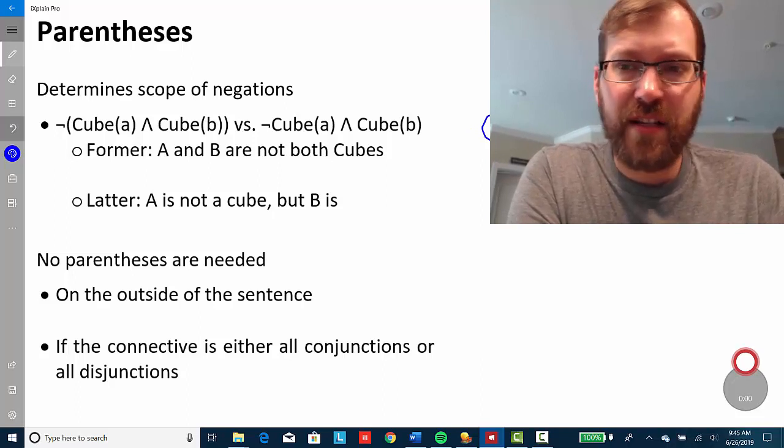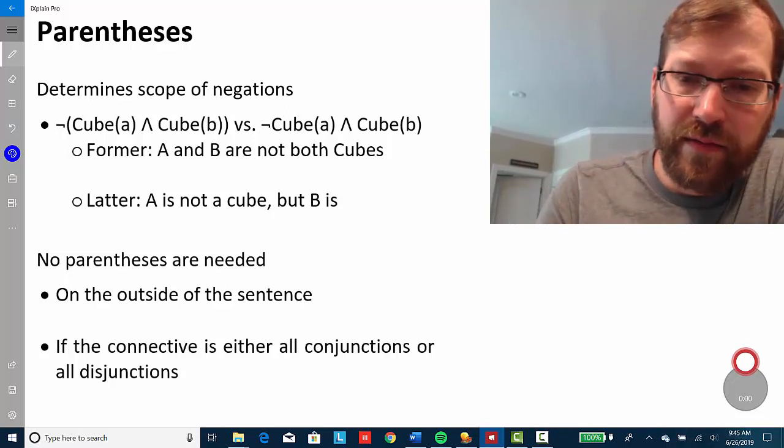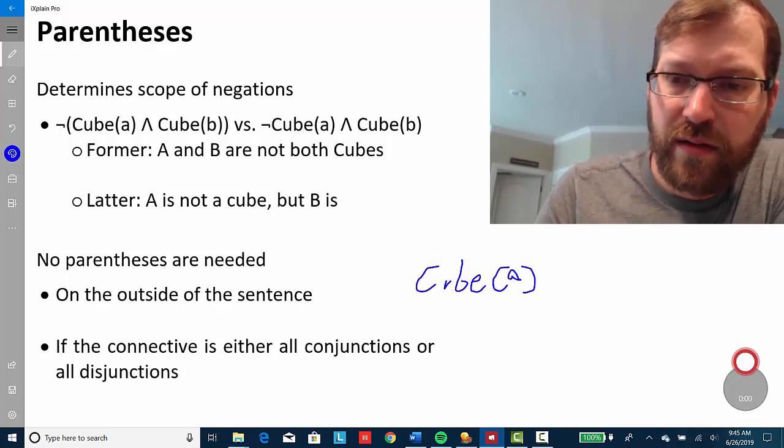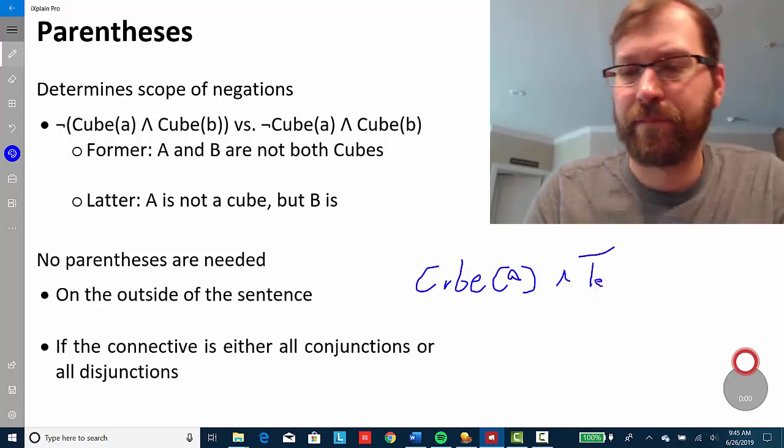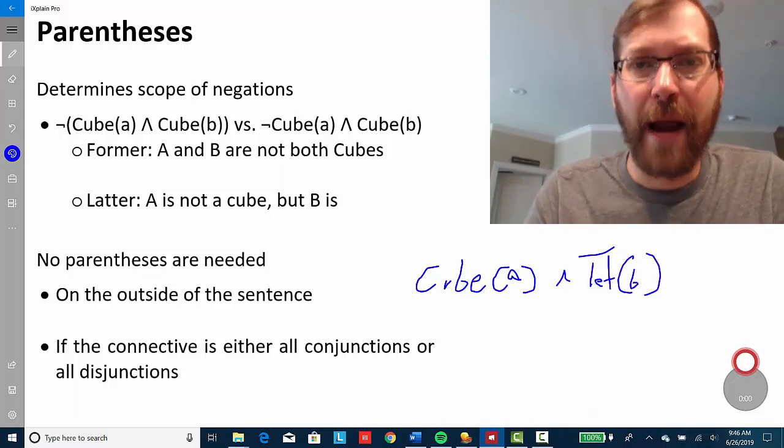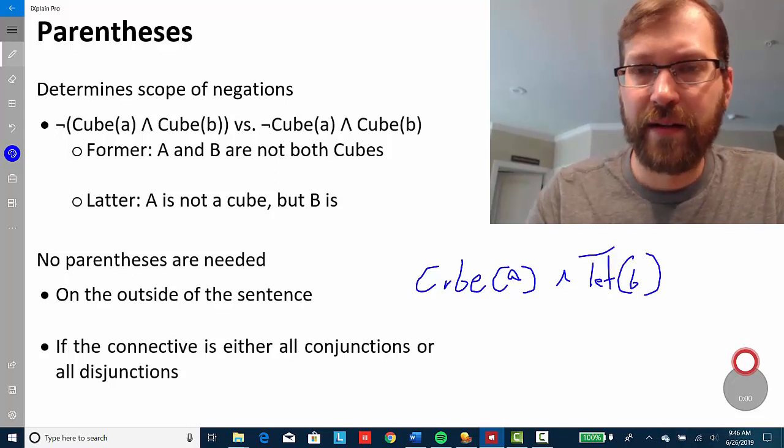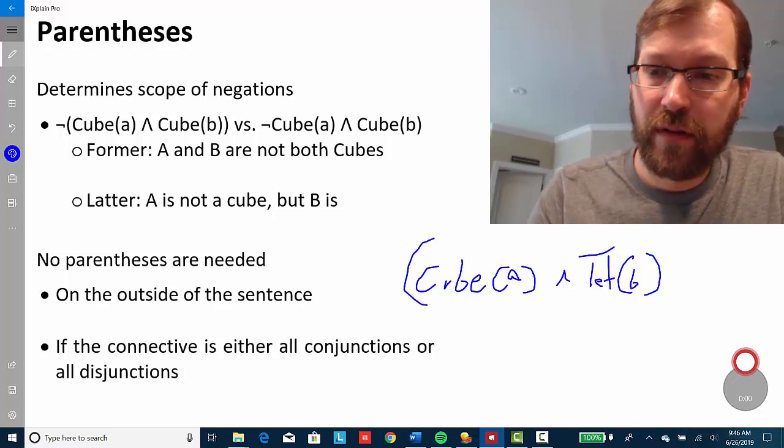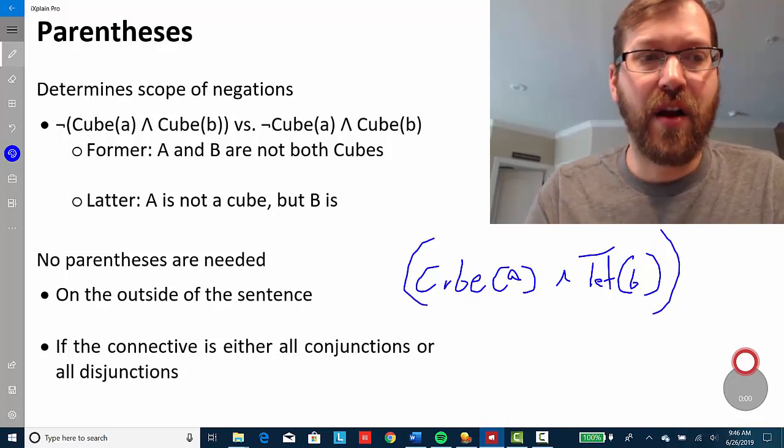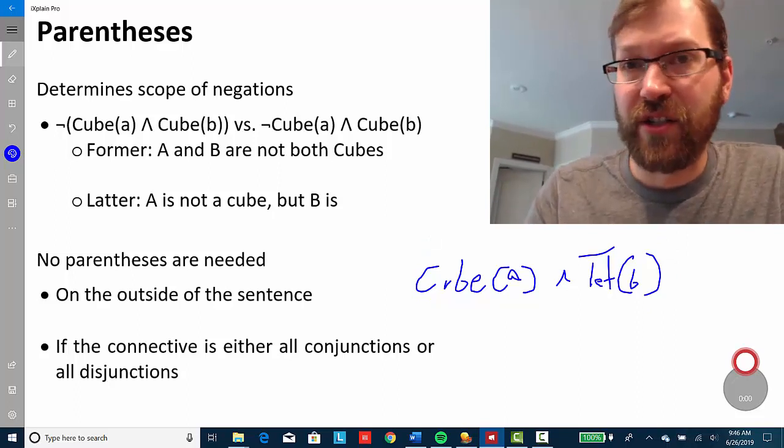There are cases in which parentheses aren't needed by a matter of convention. So, if you have A as a cube and B as a tet, I wouldn't have to put parentheses around these in order for it to be grammatically correct. I could, and that's just as grammatically correct as not having them on. But, as a matter of convention, I can just leave those parentheses off.